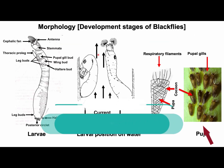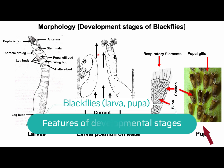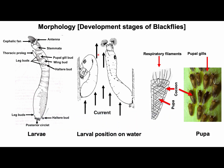Before discussing the life cycle of black flies, I will first discuss the different developmental stages, which will help us to understand the life cycle. Three developmental stages — adult, larvae, and pupae — are present in the life cycle of a black fly. In this slide, I will talk about larvae and the pupae. Here you can see the different body parts of a larva, larval position in water, and pupae in cocoons.